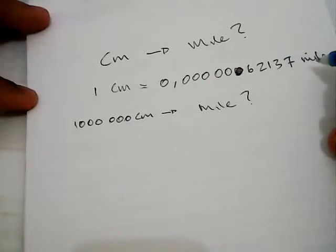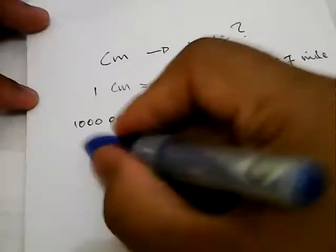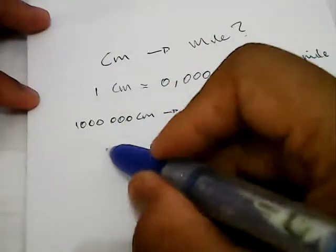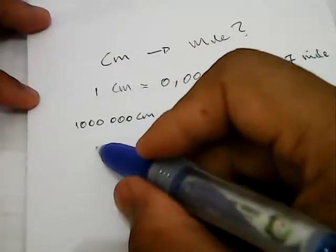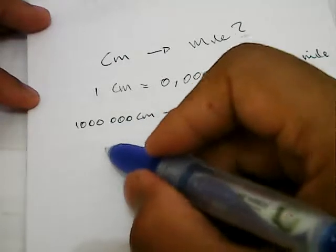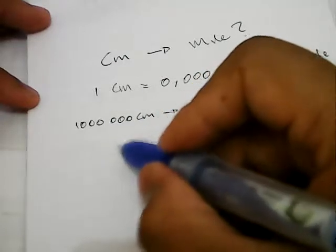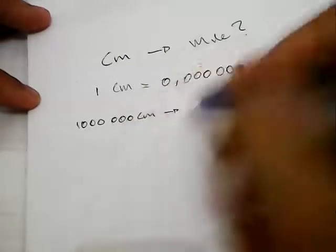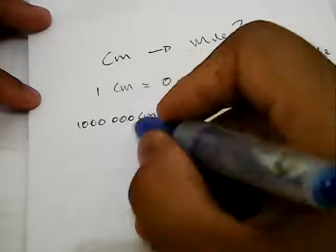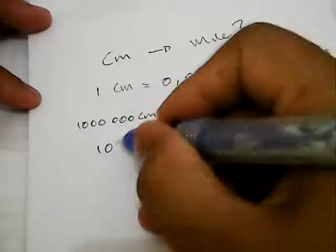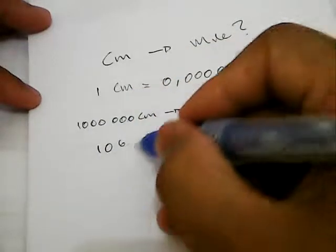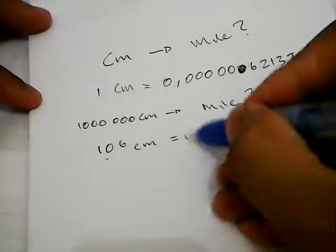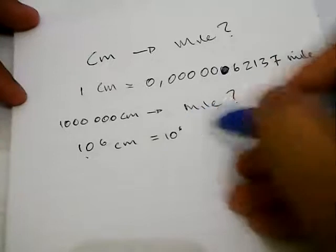To solve this problem, we need to write down this number again, but this time we need to shorten it to make it simpler to multiply. One million is actually the same as 10 to the power of 6 centimeters, and it's equal to 10 power 6 multiplied with the conversion factor.